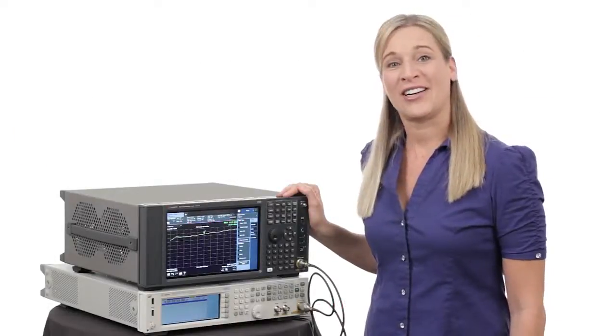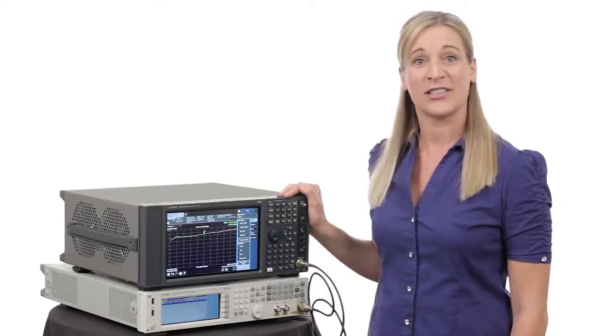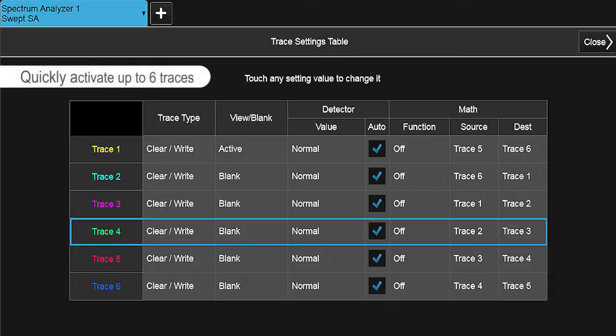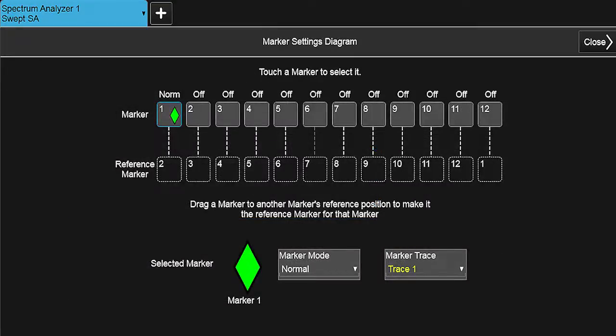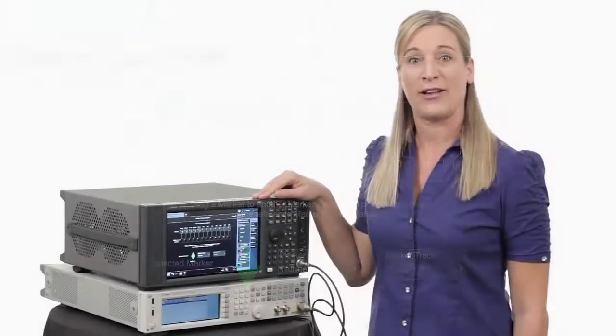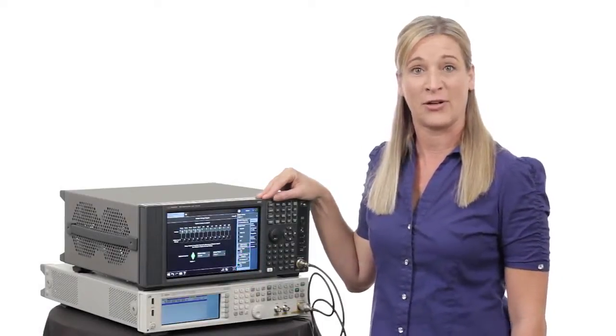So before I get started, I'd like to show you two new features that we've added to our multi-touch X-Series Analyzers. First, we've added a nice easy-to-use trace settings table. I'm able to quickly activate in this SA mode up to six traces at a time. We've also added a new marker settings diagram. I can quickly access the diagram and turn on up to 12 markers, and what I've done is I've turned on five markers and then applied them to each of the five traces that I've also turned on.